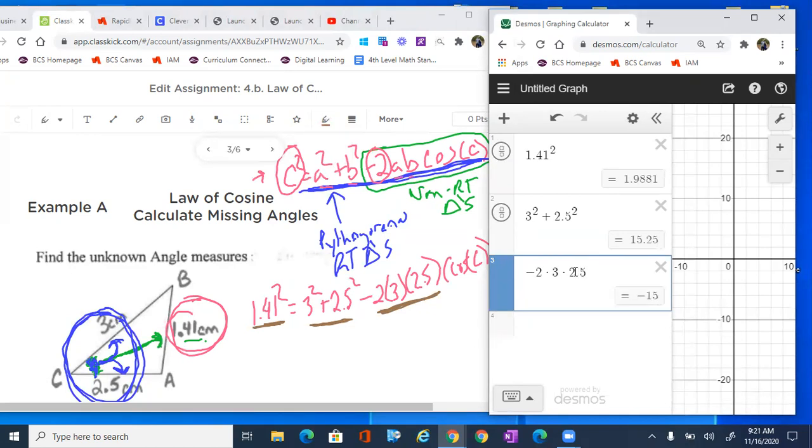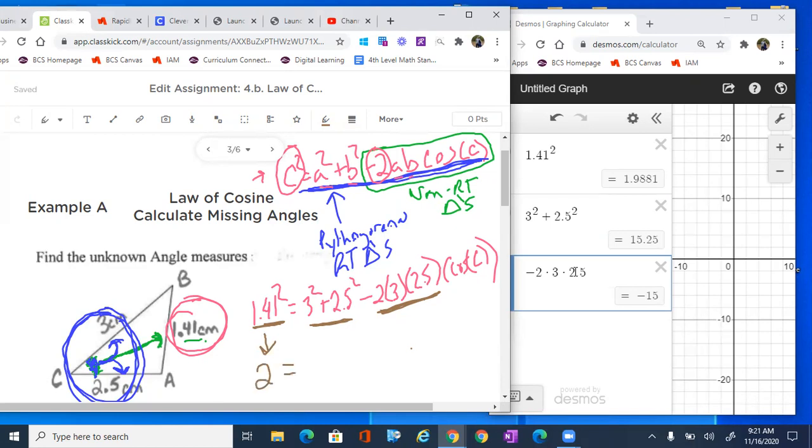And what I'm gonna do is once I've got that information, I'm just gonna go ahead and write it into place. So 1.988, let's just go ahead and write the value of 2. 3 squared plus 2.5 squared is 15.25. And then I've got negative 15.